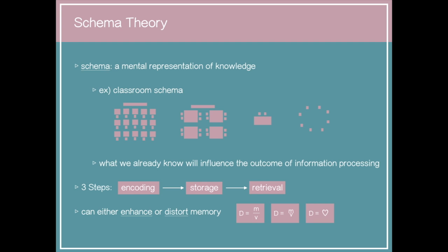Schema theory can also distort memory. If we have a cultural stereotype or bias, it can affect our memory. For example, in the Cinderella story, the godmother makes a carriage. A person from the 21st century in western culture isn't used to carriages, so they associate transportation with cars, buses, or taxis. They might replace 'chariot' with a conventional mode of transportation — that's how schema theory can distort memory.